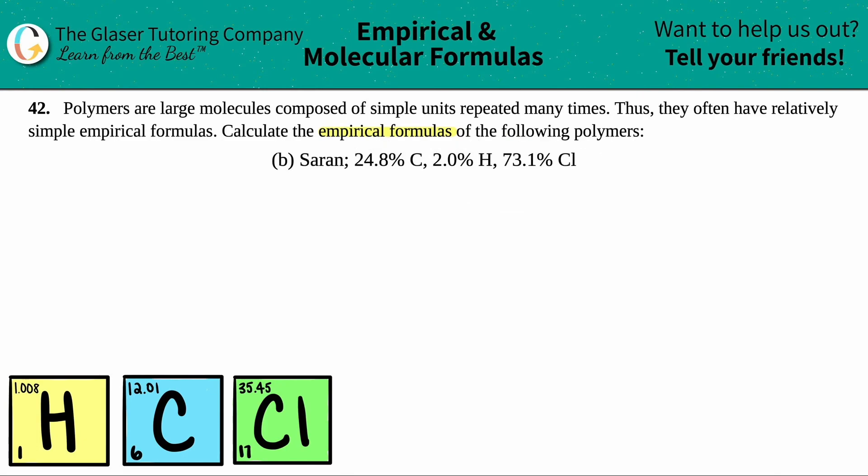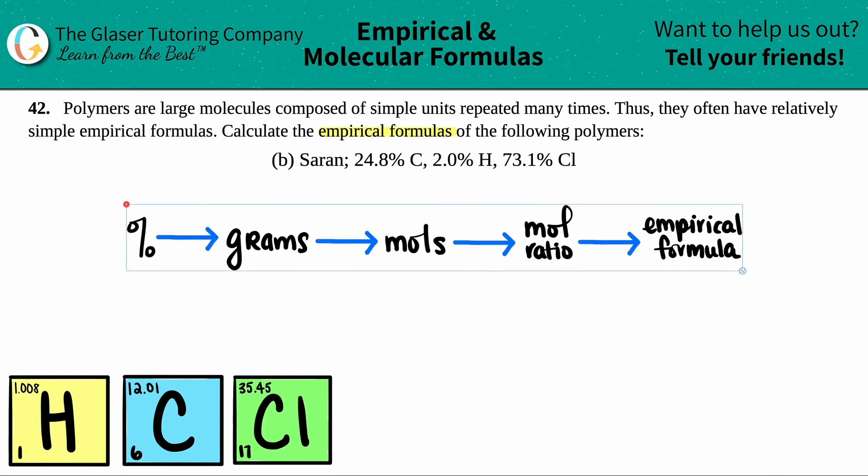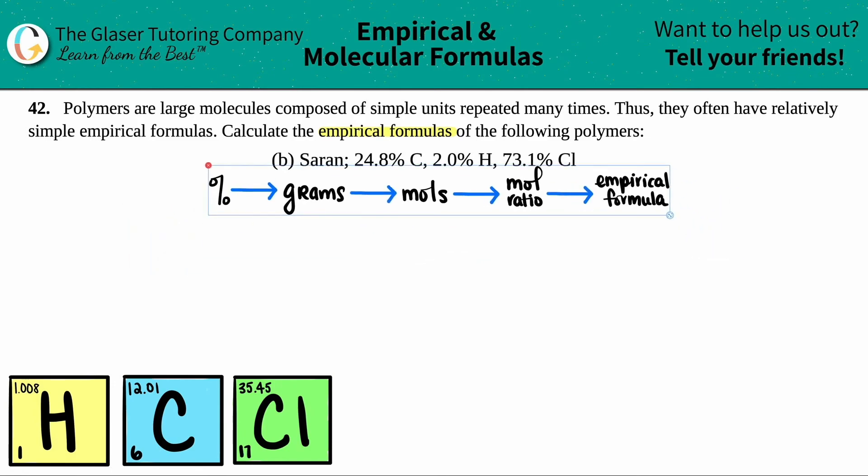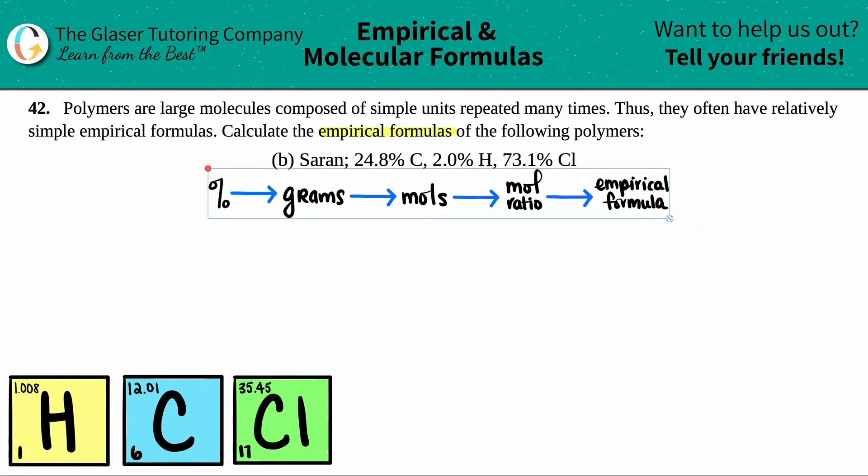And this is the process right here. Let me make this a little smaller just so that I have a little room to write because we got a lot going on, but you can basically get an empirical formula, which remember is the most simplified formula, a simplified chemical formula from the percents in four steps.